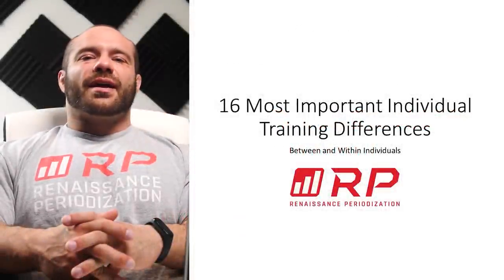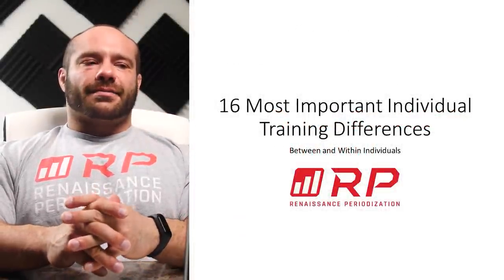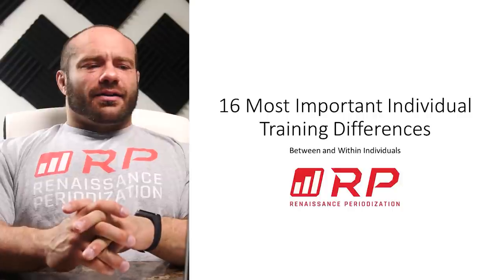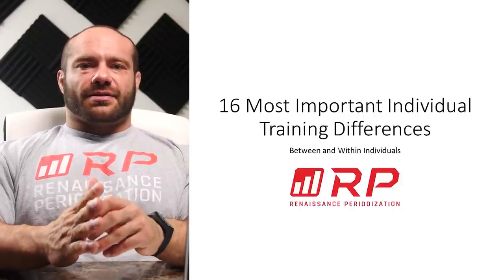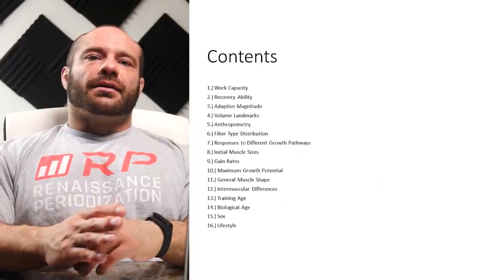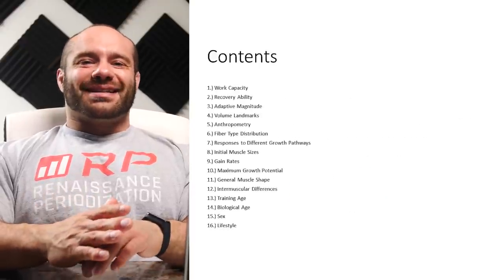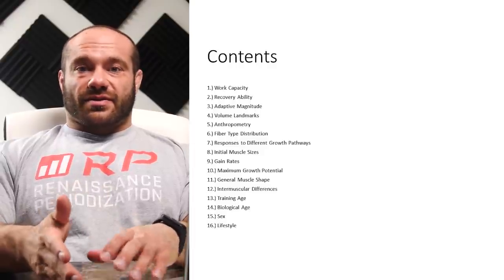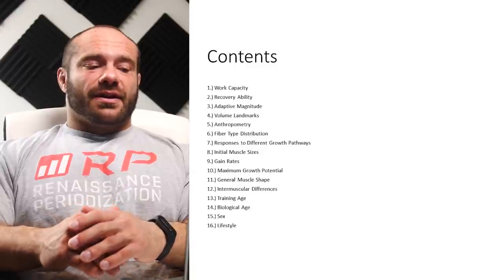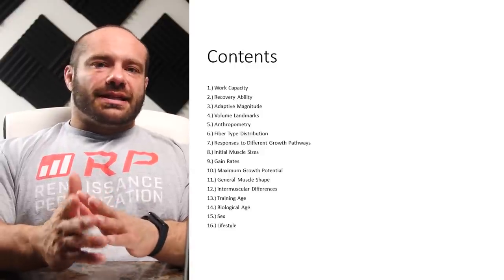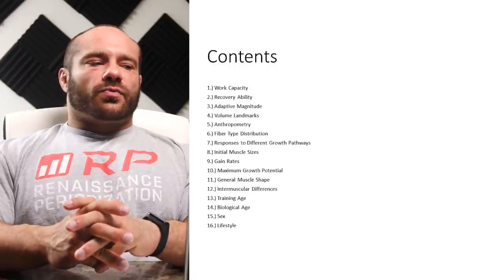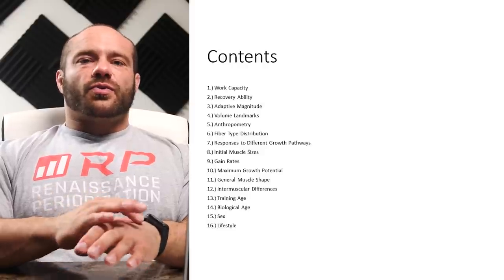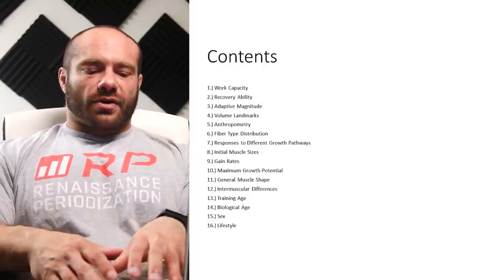Hey folks, Dr. Mike Israetel here for Renaissance Periodization, RP+, hypertrophy concepts and tools, lecture number 24. We have the most important individual training differences — we've listed 16 of them. These are from the upcoming, or depending on when you watch this already released, Scientific Principles of Hypertrophy Training book, in the chapter on individual differences, which is the last main chapter of the book. We cover 16 examples that are the most important variables to keep mindful of — differences between individuals when designing programs, evaluating programs, selecting programs, and so on.